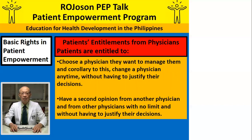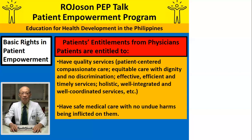Patients' entitlement from physicians. Patients are entitled to choose a second opinion from another physician and from other physicians with no limit and without having to justify their decisions. Patients are entitled to have quality services: patient-centered, compassionate care; equitable care with dignity and no discrimination; effective, efficient, and timely services; holistic, well-integrated, and well-coordinated services.